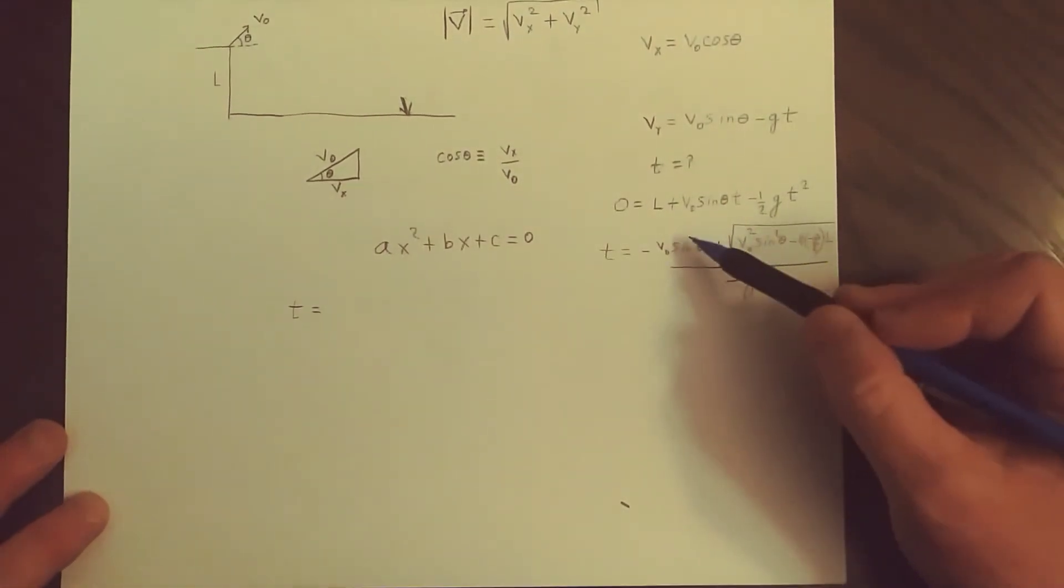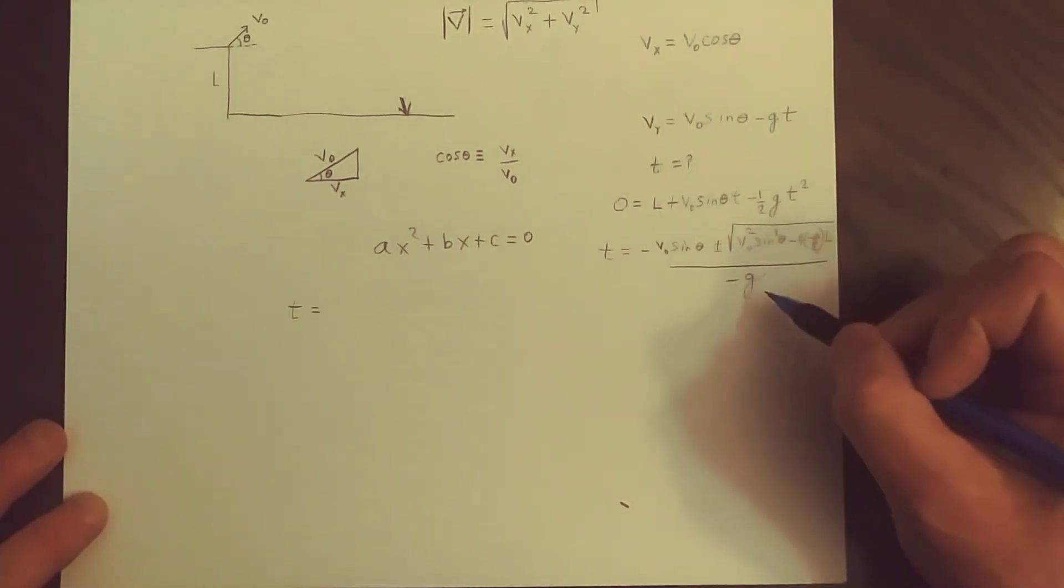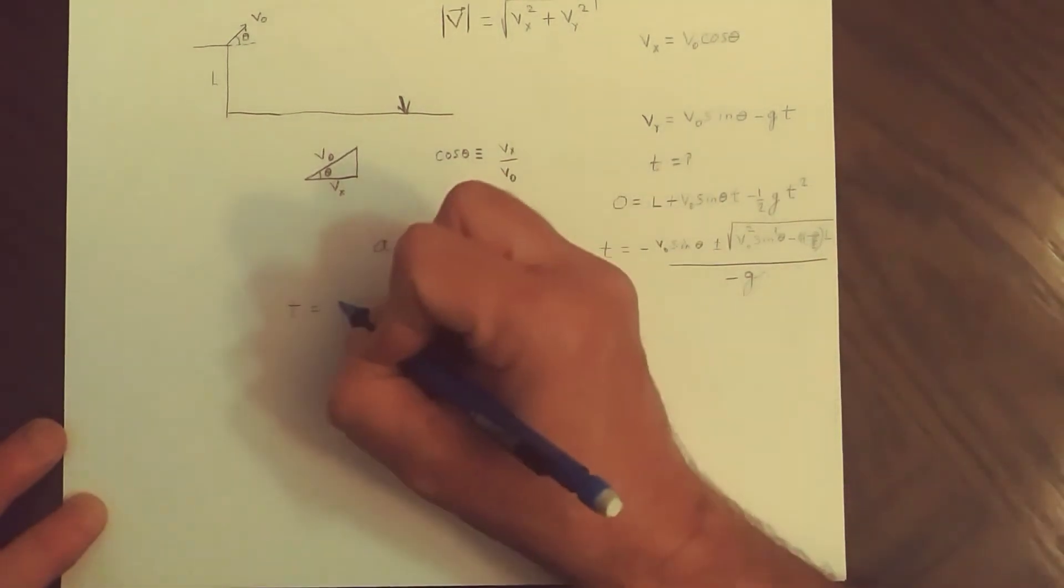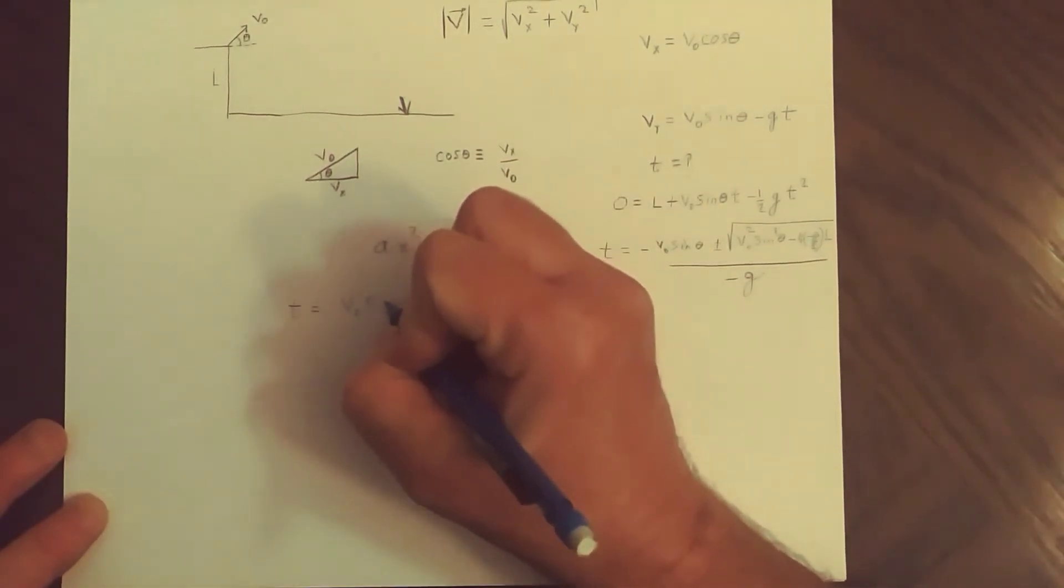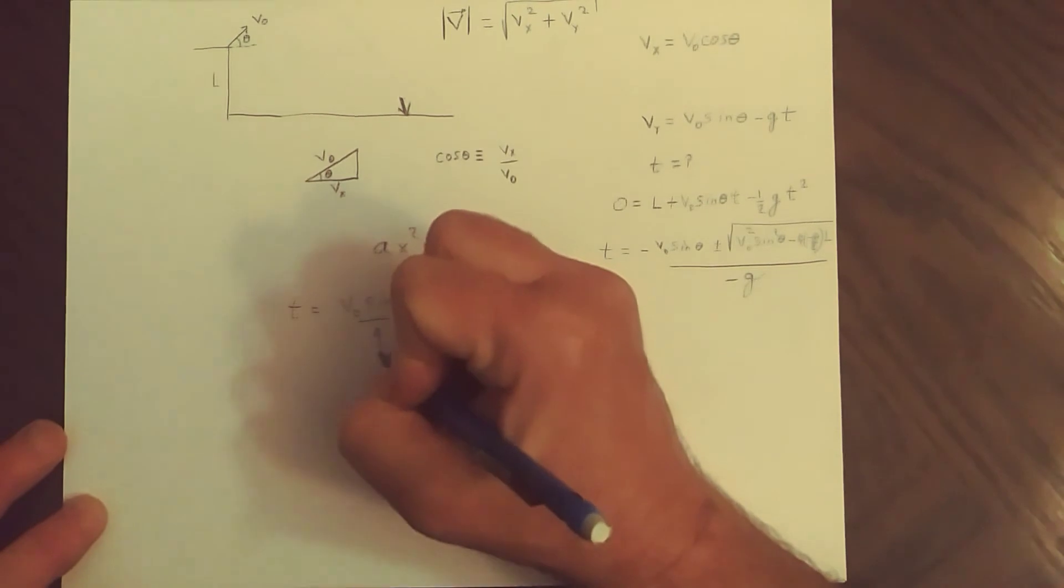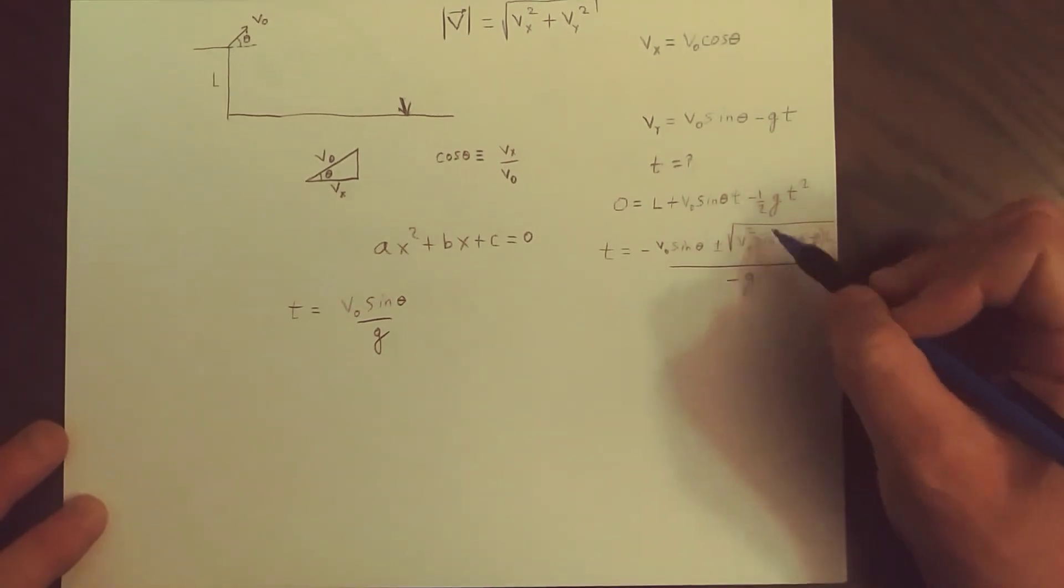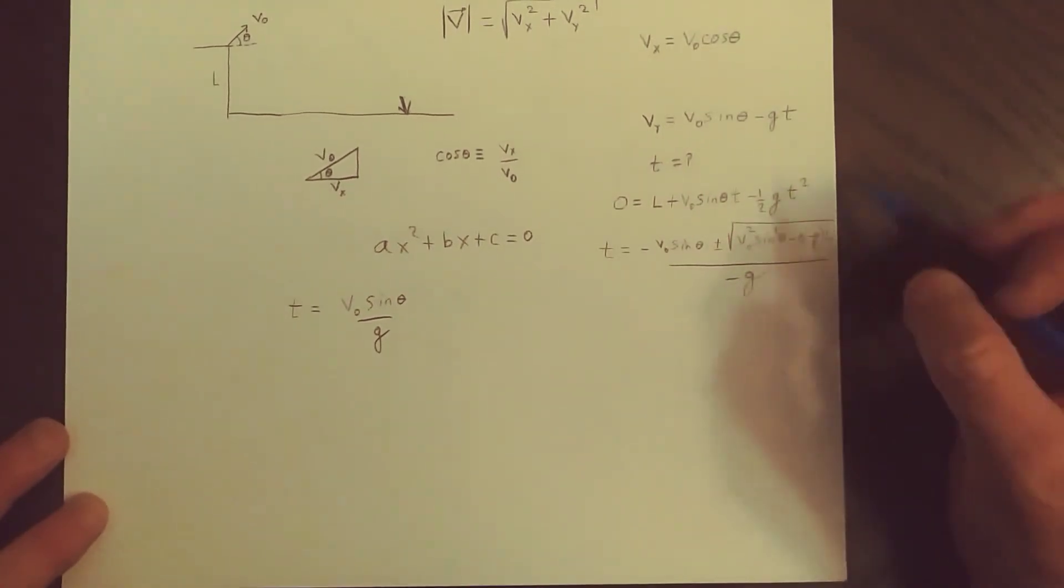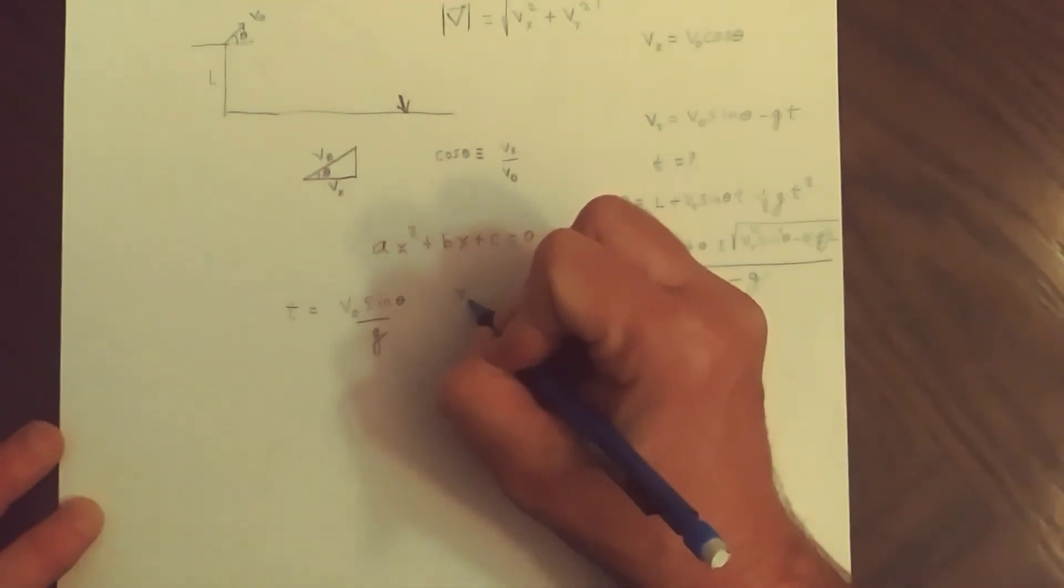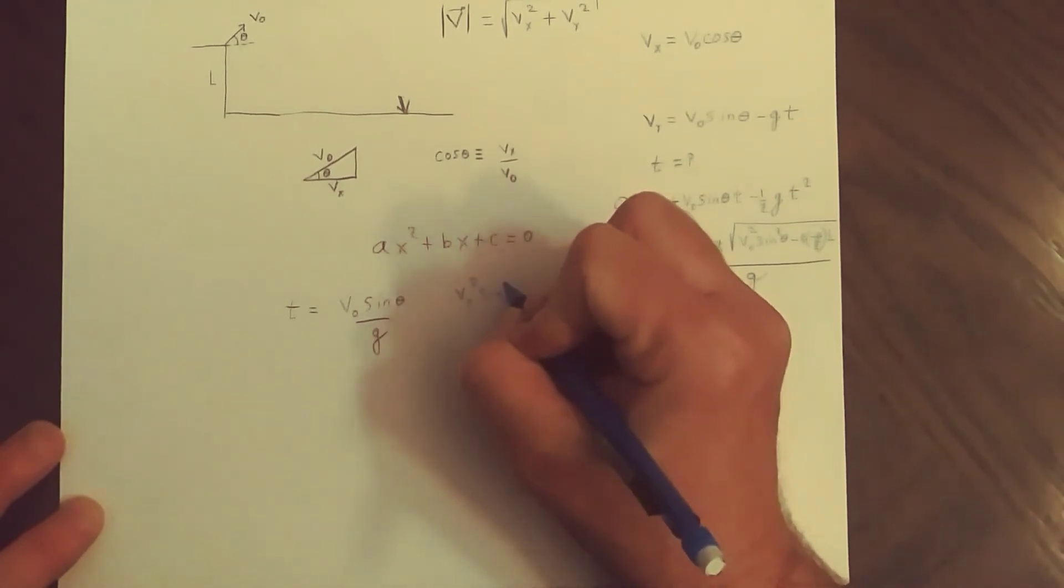So we have to look at this in a little more detail. So what is T? Well, it's the sum of two terms. The first term is V naught sine theta over G because we have minus over minus that's a positive. So we get a positive term V naught sine theta over G.